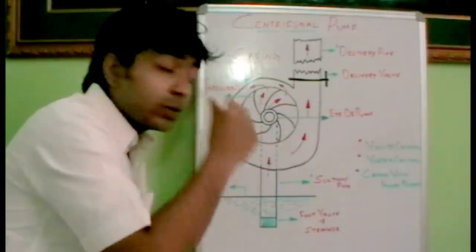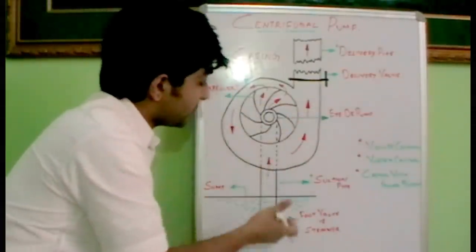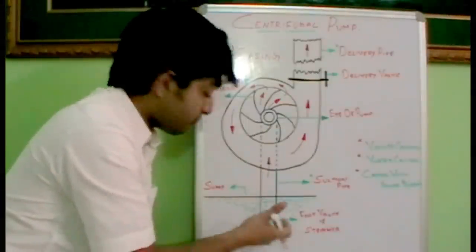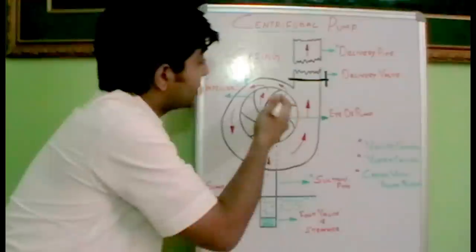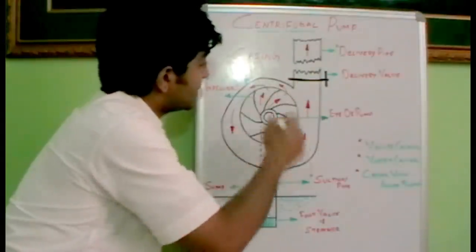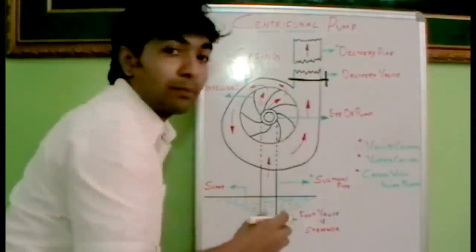So what happens, the impeller rotates and a lot of pressure is created, which sucks the oil or the fluid from the sump towards the impeller. And through these gateways, this oil is spilled towards the casing. And the casing will carry the oil towards the delivery pipe.